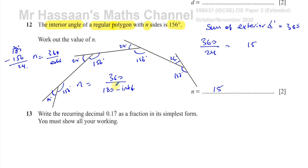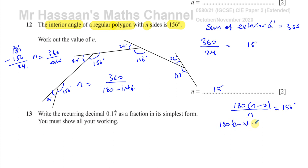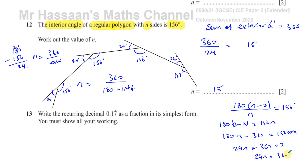The more difficult way is to use the formula 180 times (n minus 2), which is the formula for the sum of all the interior angles. If you divide that by the number of sides, that gives you the size of one interior angle, which is 156. Then you solve the equation: 180(n − 2) = 156n, which gives 180n − 360 = 156n. Subtracting 156n from both sides gives 24n − 360 = 0, so 24n = 360 and n = 15.